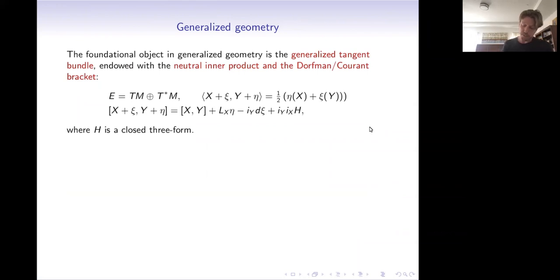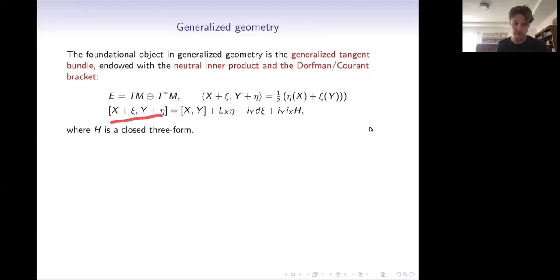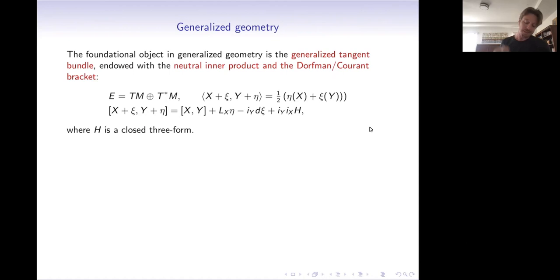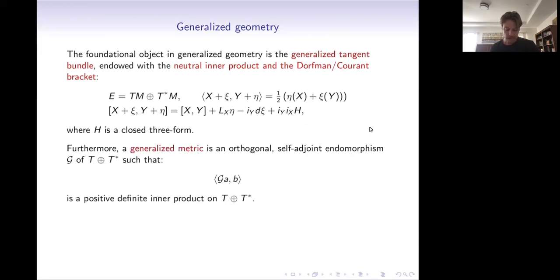In generalized geometry, the foundational starting point is to replace the tangent bundle with the generalized tangent bundle T plus T-star. This bundle comes equipped with a neutral inner product, and there's a natural class of extensions of the Lie bracket — the so-called Dorfman bracket — which extends the Lie bracket on vector fields by terms involving natural operators on vector fields and one-forms, and also allows for further twisting by a closed three-form. This algebraic extension already encodes the structure of a closed three-form.